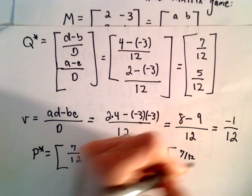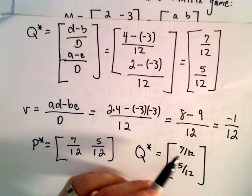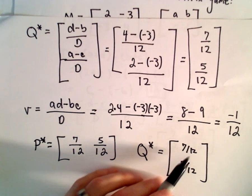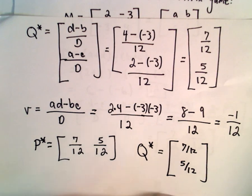we actually found the same thing. It says that the column player should choose the first column with a probability of 7 twelfths and a second column with a probability of 5 twelfths.